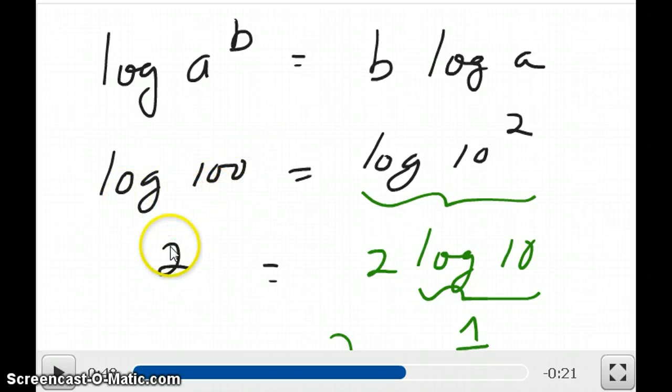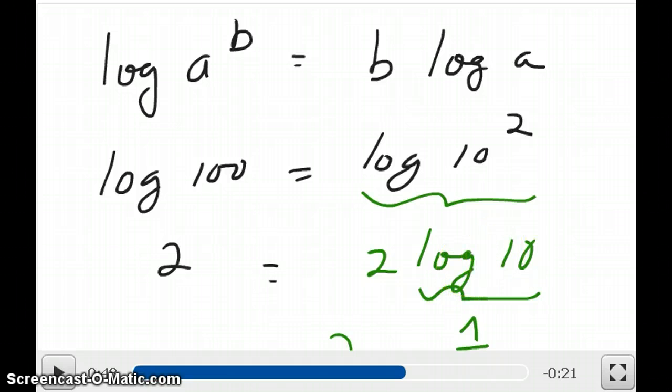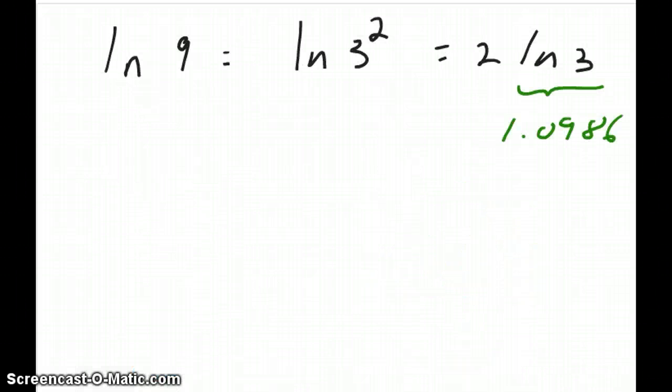Log of 100, we know it's 2. You can write this as also log of 10 to the power of 2, and you take the 2 and put it to the front, so it becomes 2 times the log of 10. The log of 10, of course, is just 1, so then your answer is 2 times 1, which is equal to 2.